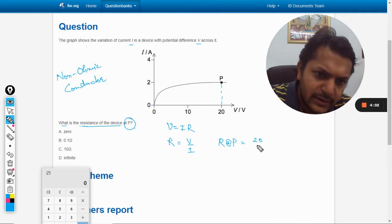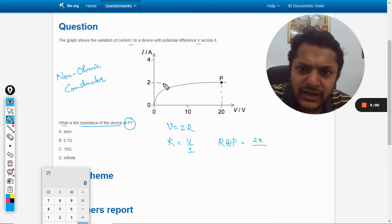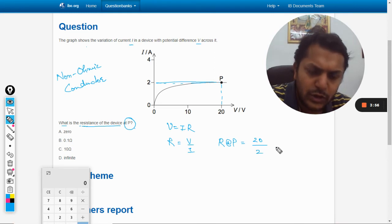That is 20, and the current at P, that should be 2 according to the diagram. So our answer should be 10 ohm.